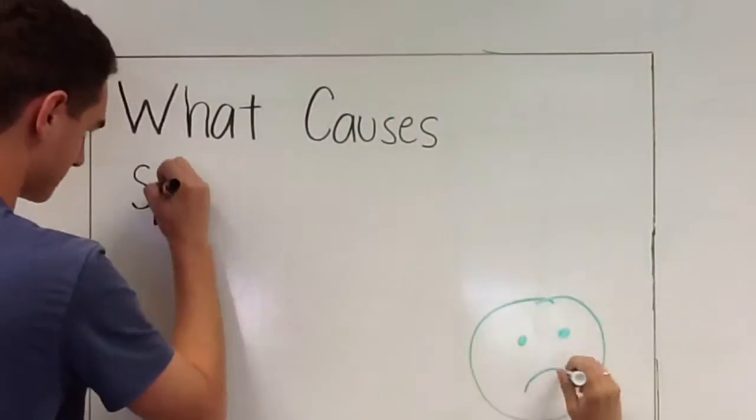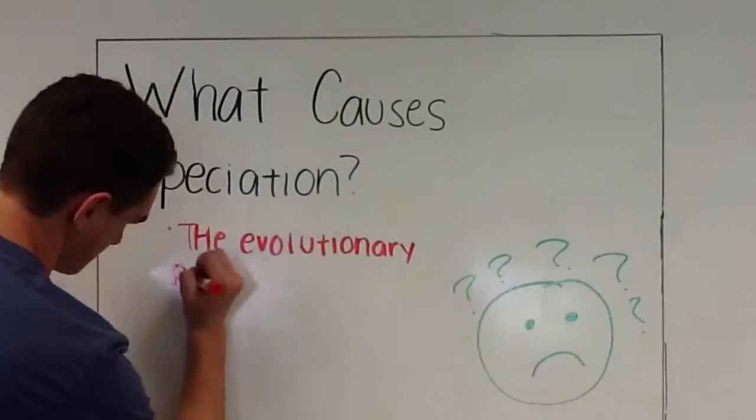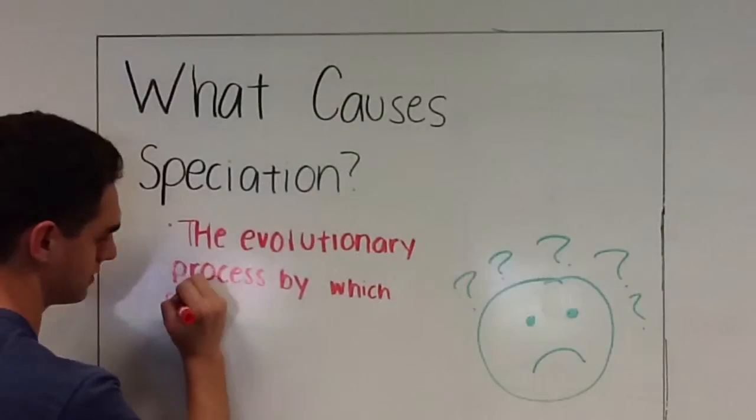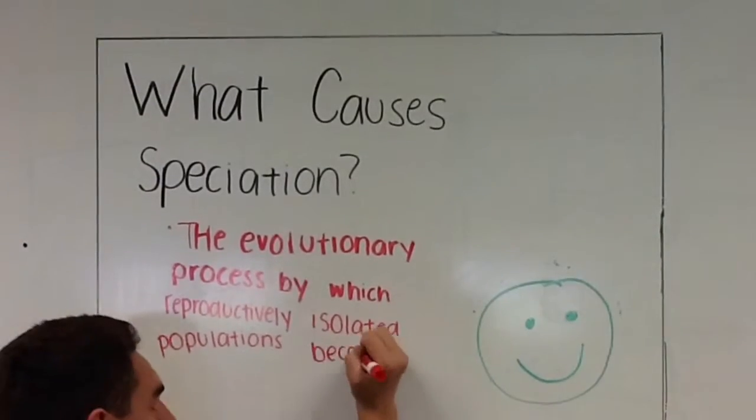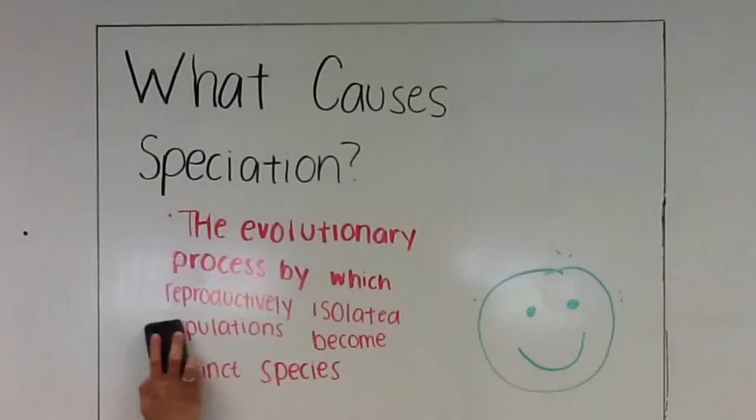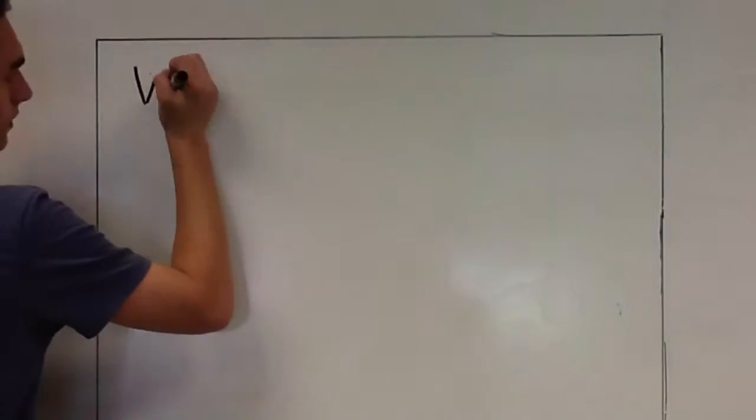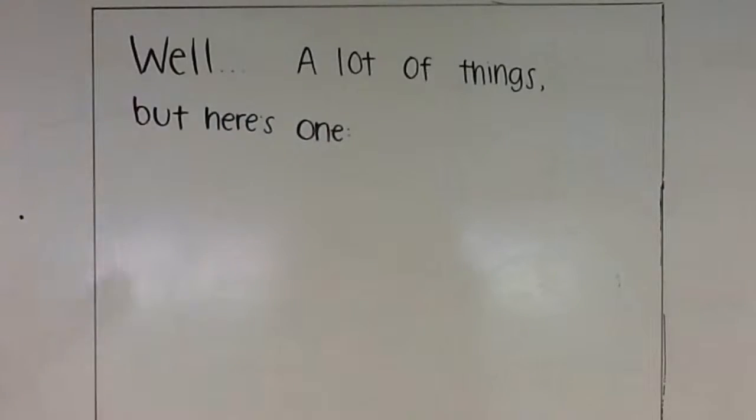What causes speciation? Speciation is the evolutionary process by which reproductively isolated biological populations evolve to become distinct species. A lot of things cause this, but here's one: reproductive barriers.